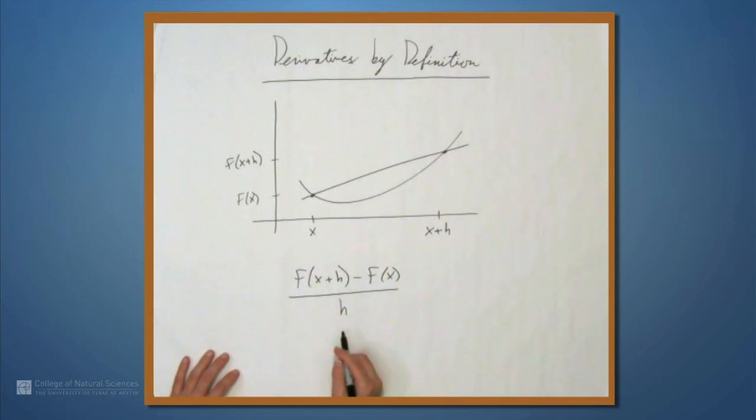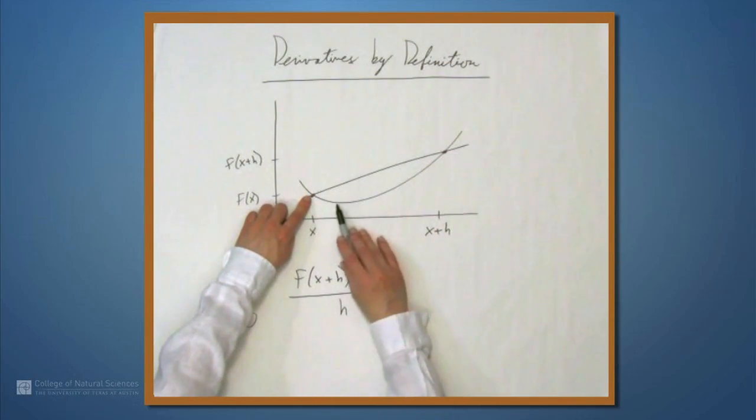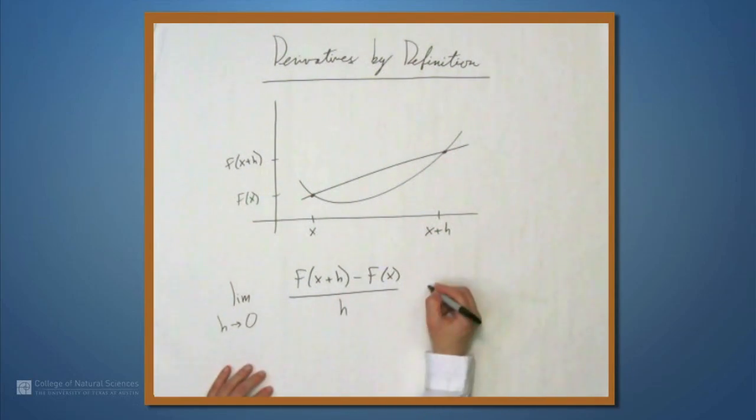That's the slope of this line, and the slope of the tangent line is the limit of this expression as h approaches 0, as this point moves ever closer to this point. And this is, by definition, the derivative of f at x.